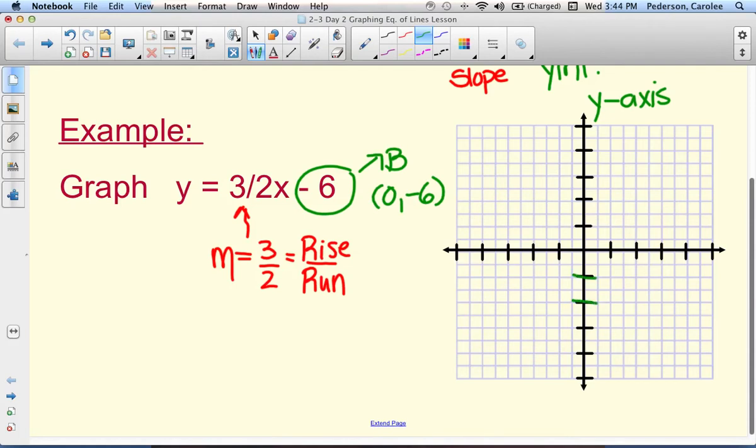So here is down 2, down 4, down 6. So that ordered pair is 0, negative 6.